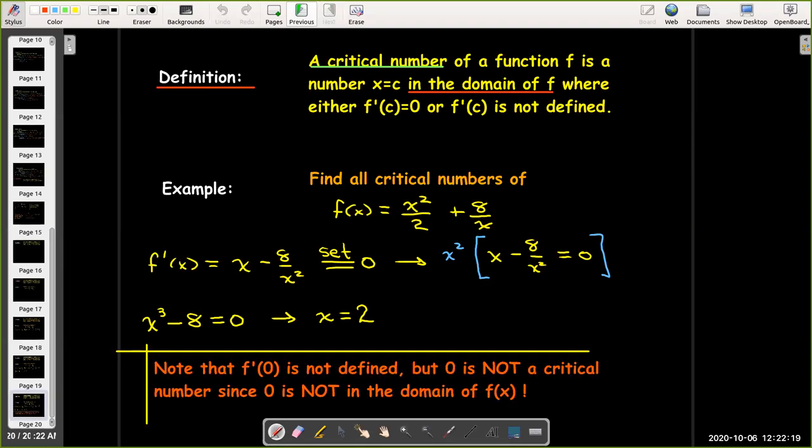Now when I look at the formula for f'(x) I can see that this formula is not defined when x equals 0. However, if I look at the original formula for f(x) I can see that x = 0 is not in the domain of f. So x = 0 is not a critical number. So my only critical number is x = 2.